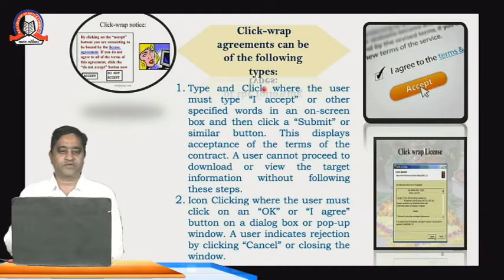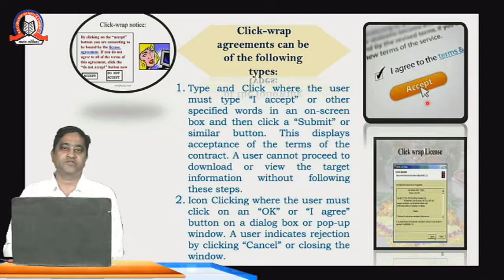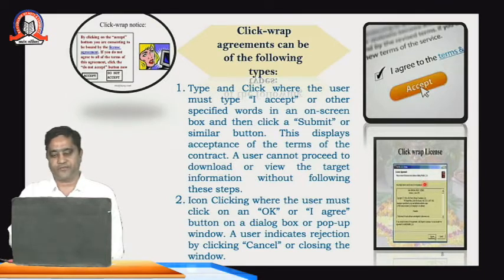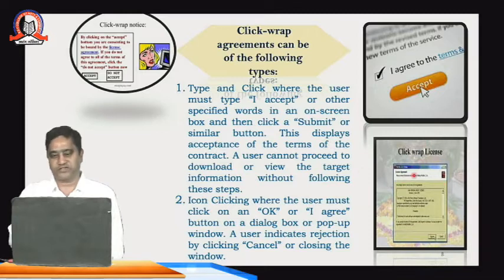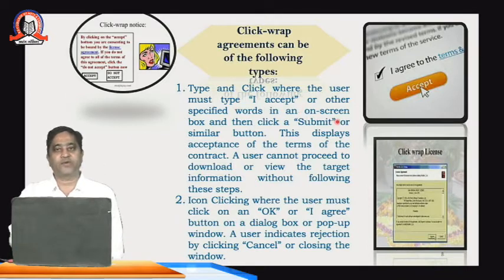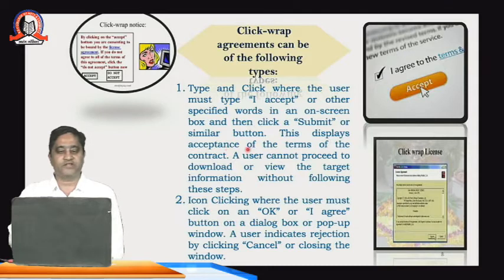Click wrap contracts are of the following types. As seen in the images: 'I agree to the terms and conditions' or 'I Accept' — the buyer installs the product while abiding by the rules and regulations framed by the seller. In a click wrap license, when a license is granted for a biometric device, installation product, or software, the license period is also mentioned. In the 'type and click' type, the user must type 'Accept' or a specified word, then click a 'Submit' button. This displays acceptance of the terms of the contract.